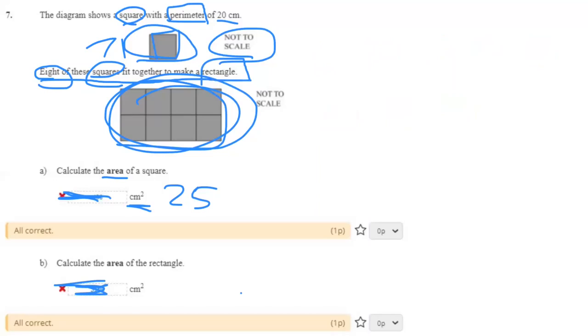So, to make it easier, we can just take the 25 cm² and multiply it by 8. It equals 200 cm².